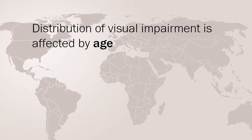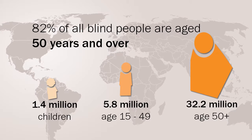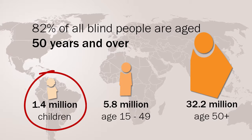The distribution of visual impairment is affected by age. Globally, 82% of all blind people are aged 50 years and over. The importance of childhood blindness is not in the numbers affected, but in the number of years a child has to live with that blindness — this is sometimes referred to as blind years.